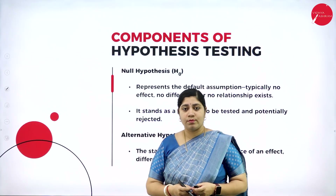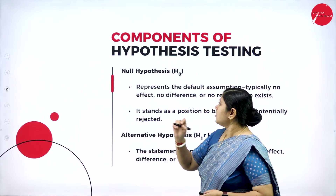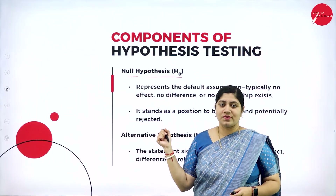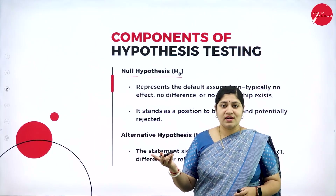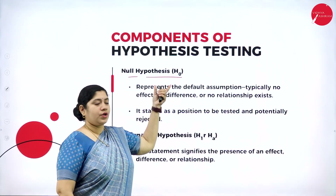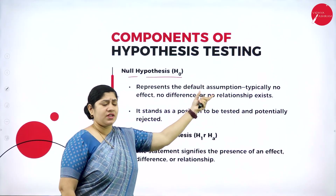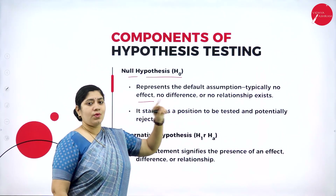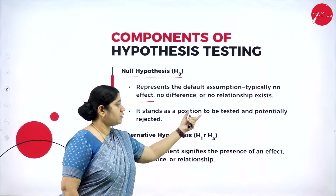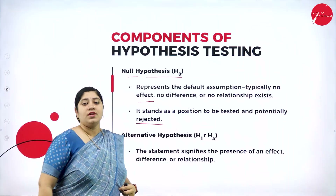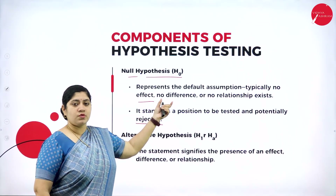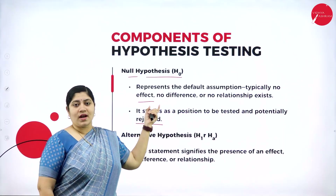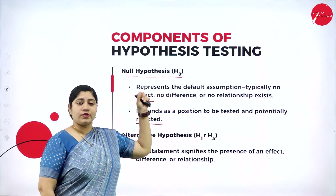Let's see the components of hypothesis testing. The first one is the null hypothesis, H0. H0 represents the default assumption — typically that there is no effect, no difference, or no relation. It stands as a position to be tested and potentially rejected. Whenever we have an assumption of no effect, no difference, and no relationship, the null hypothesis H0 exists.